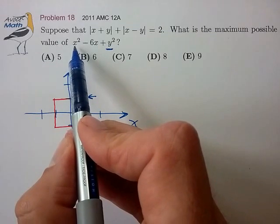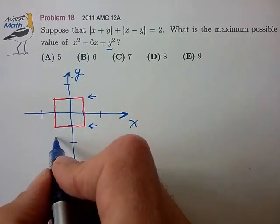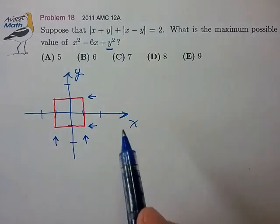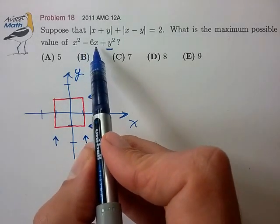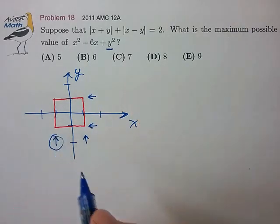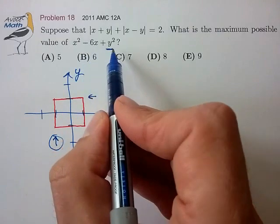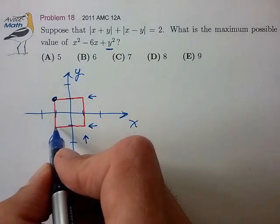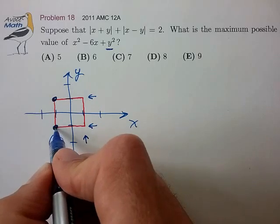To maximize the x squared contribution, we want x to be either minus 1 or plus 1. But maximizing the minus 6x contribution, well that's pretty clear. We need to make x equal to minus 1. So it seems like the points we need to choose to maximize this expression are either the upper left corner or the lower left corner.